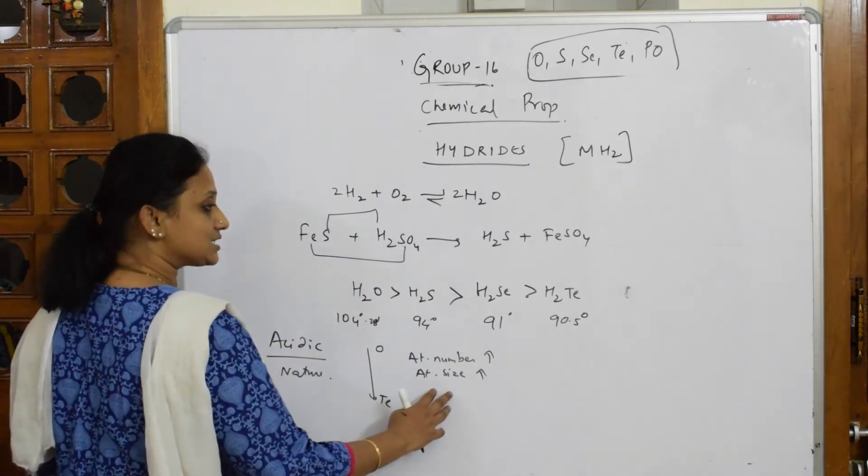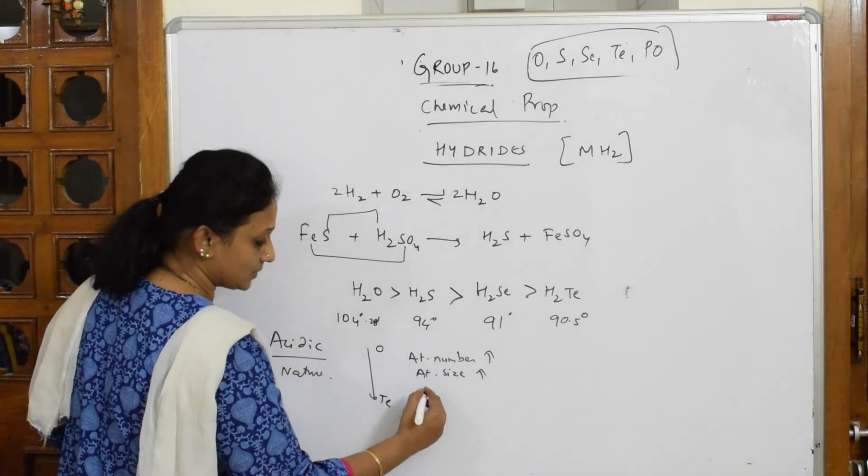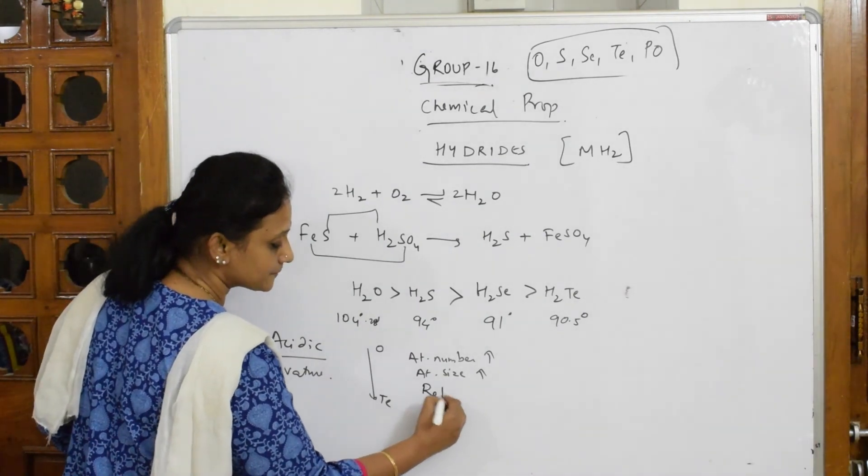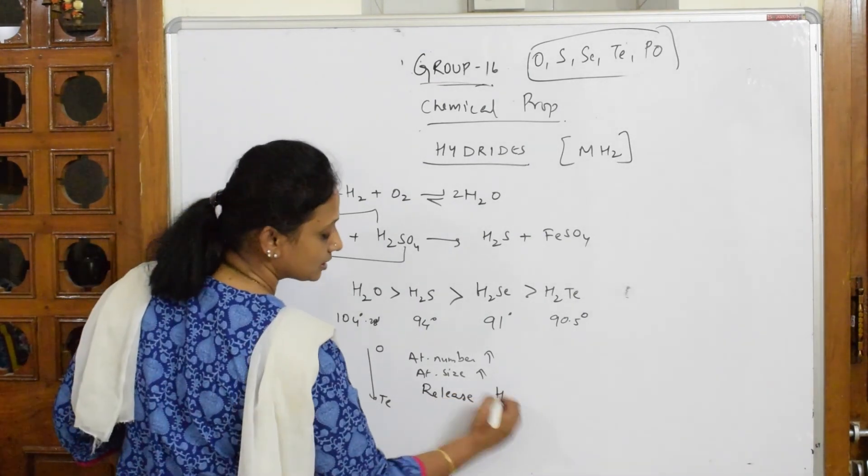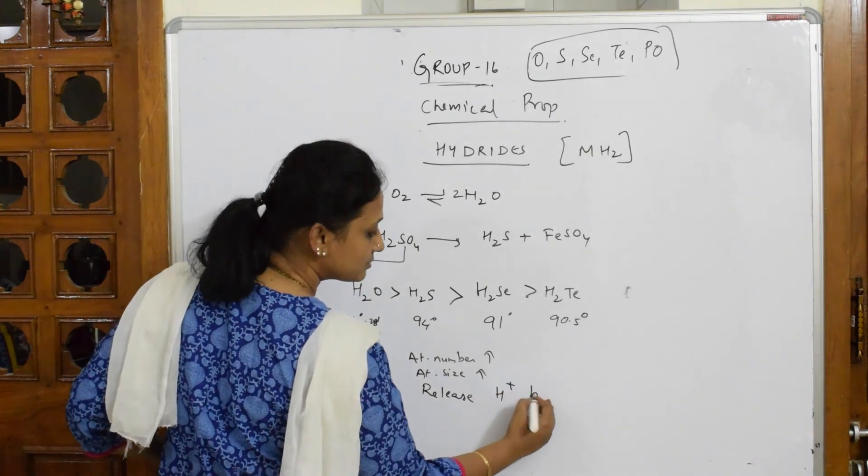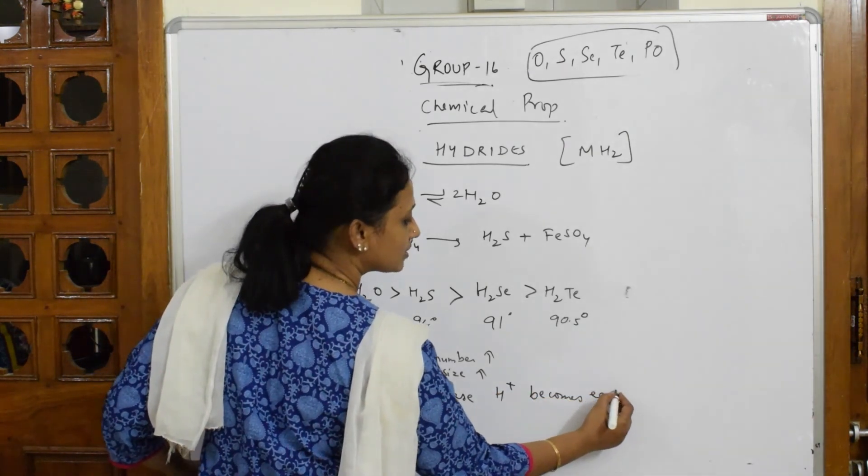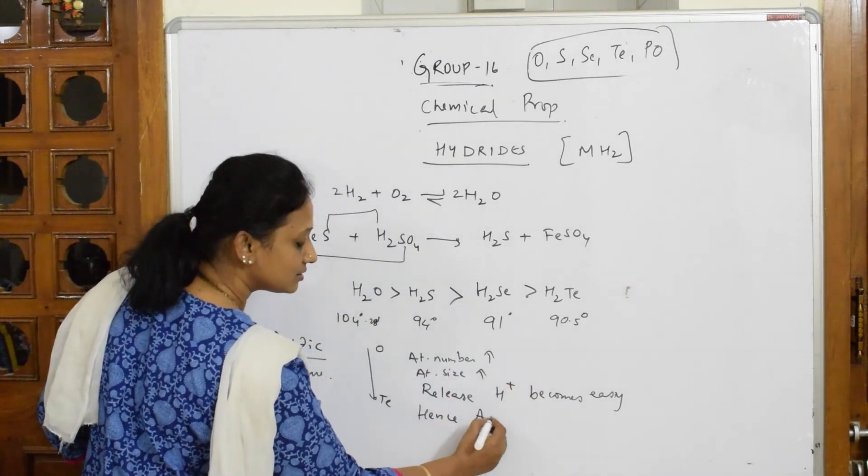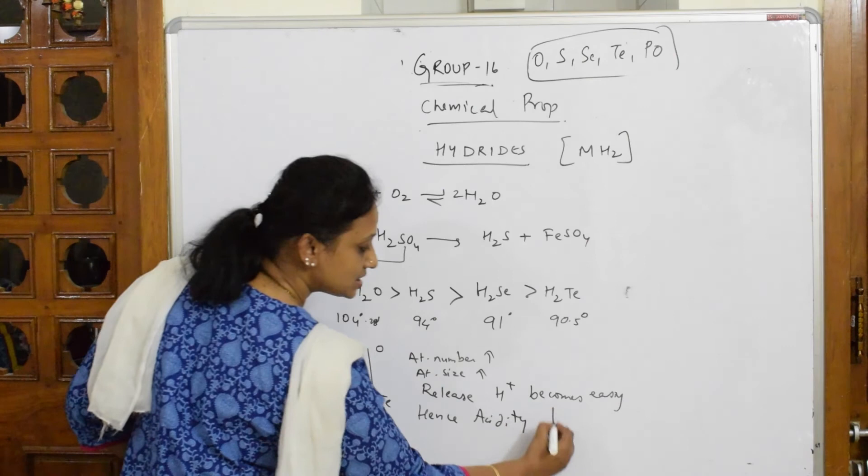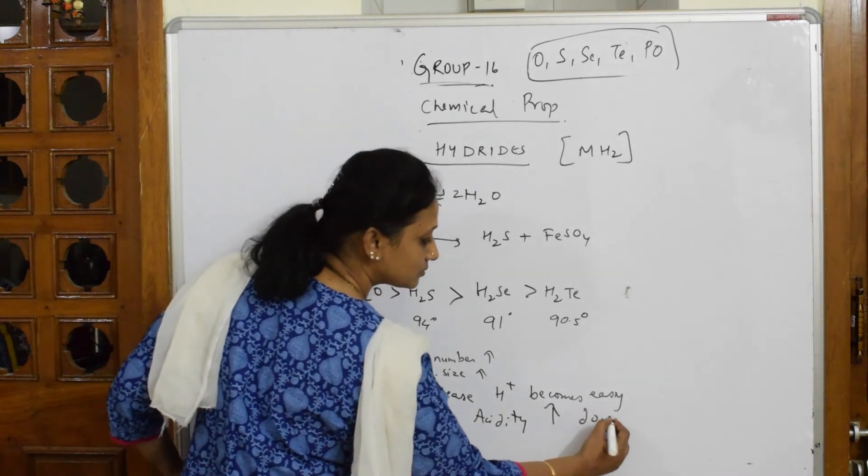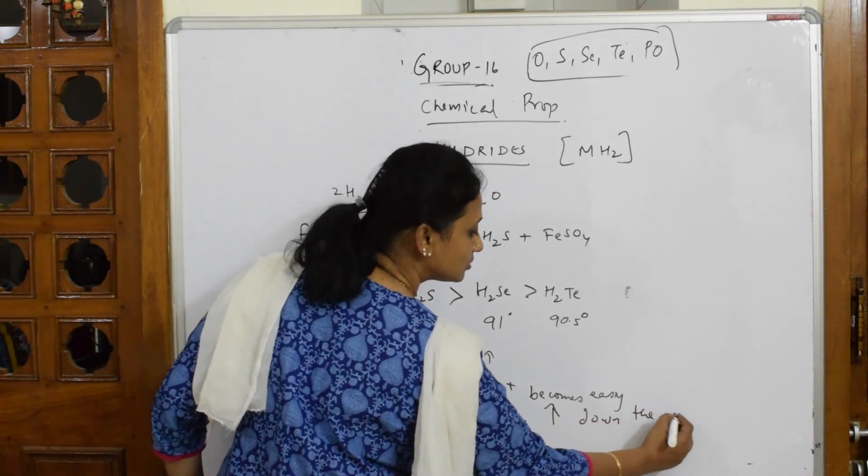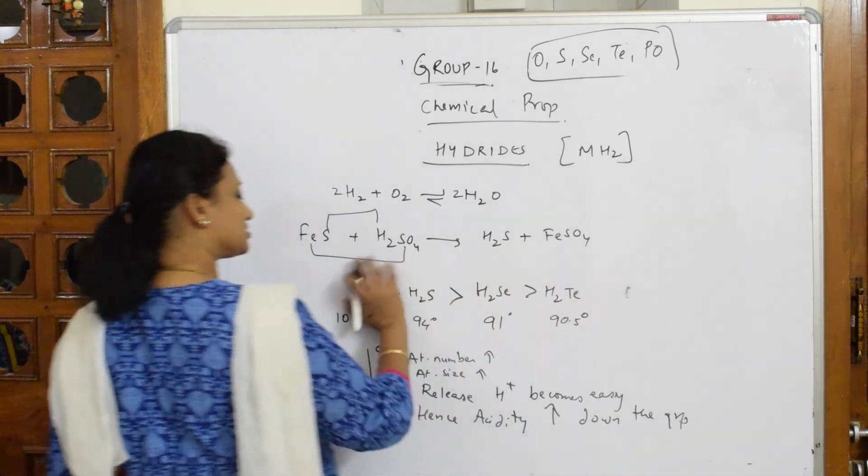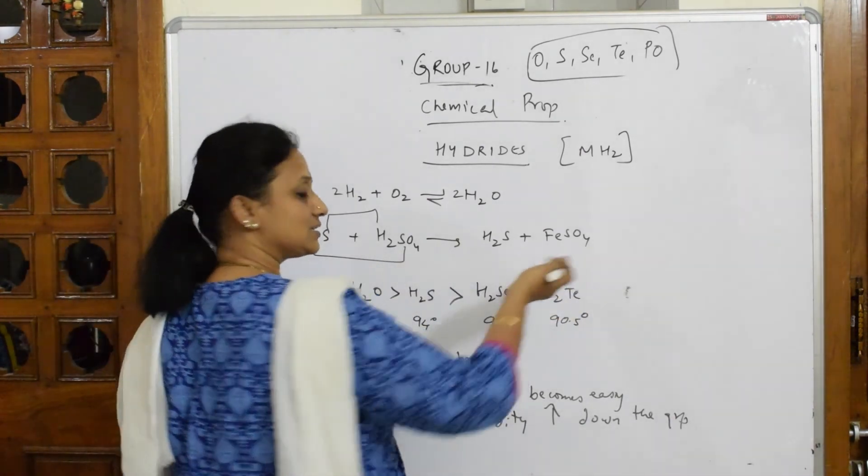Atomic size increases, release of H+ becomes easy. Hence, acidity increases down the group. So, this is more acidic, this is neutral. As I go down, acidity increases.